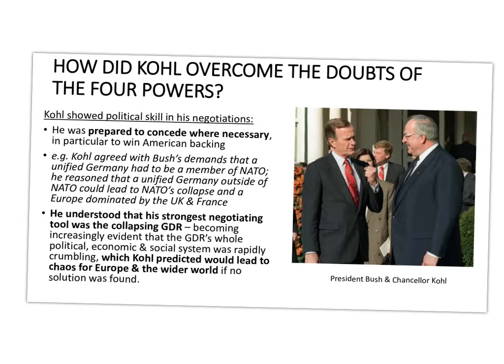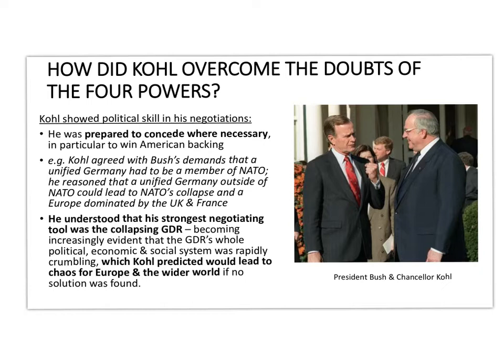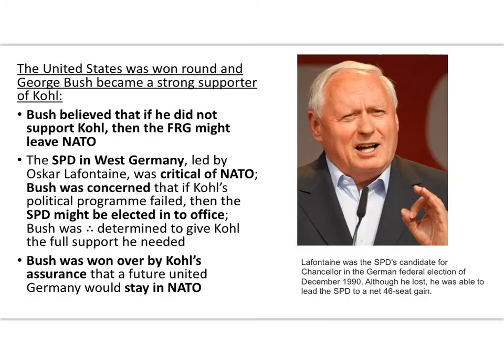There's a picture of Bush and Kohl meeting in early 1990. Kohl agreed with Bush's demand that the future unified Germany would belong to NATO, reasoning that a unified Germany outside NATO could lead to NATO's collapse. Kohl understood that his strongest negotiating tool was the collapsing East Germany — he predicted its collapse would lead to complete chaos for Europe, so he applied that pressure and brought Bush around.